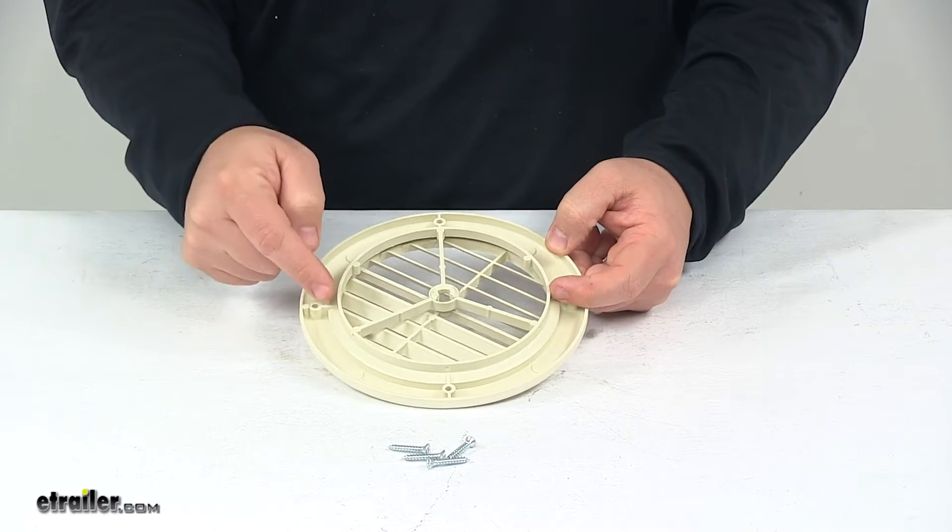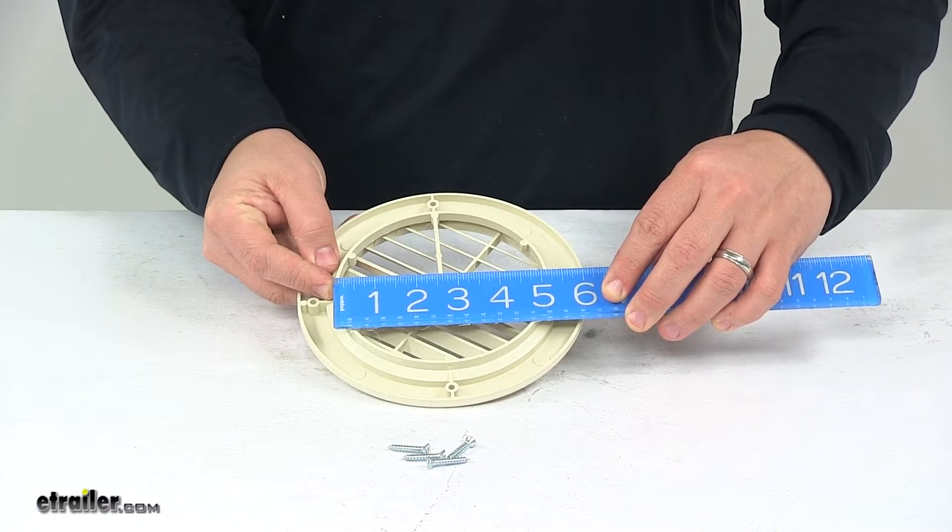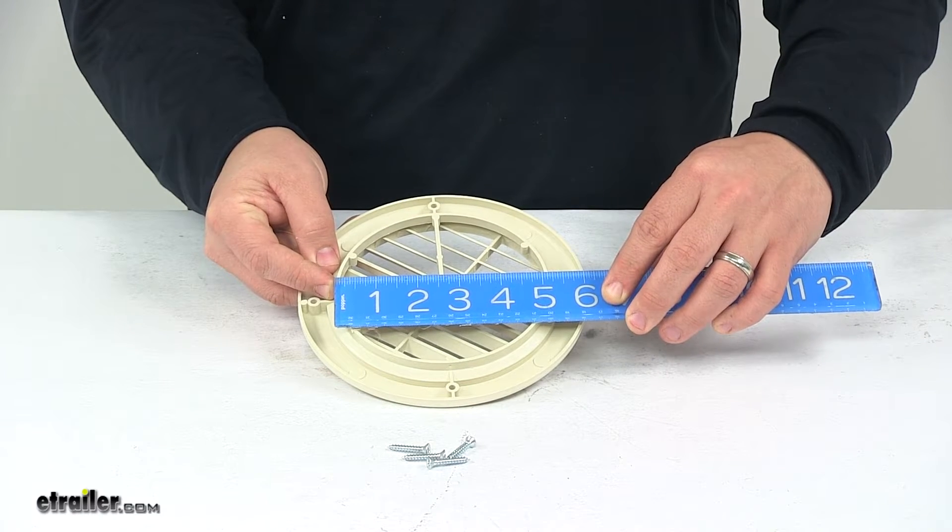This portion here, edge to edge, gives us a diameter measurement of about five and three-sixteenths of an inch.